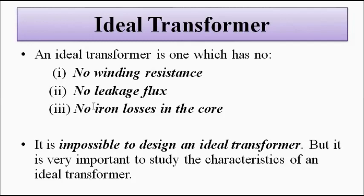Next is no leakage flux. Please check the videos related to coupled circuits and phasor diagrams of AC circuits before watching this video — I have explained what mutual flux and leakage flux are, how two inductive coils link with each other, EMF induction and generation. Leakage flux is that flux which, when current flows through the windings, a flux is generated in each winding. Some amount of that flux links with the other winding — that is mutual flux — and some links with the winding itself.